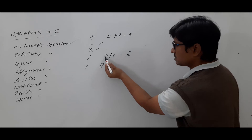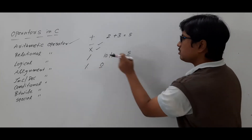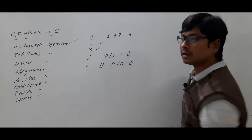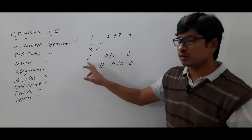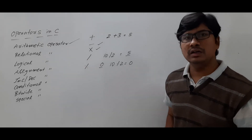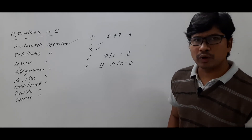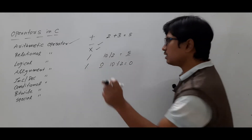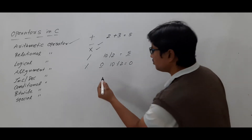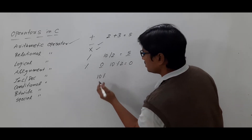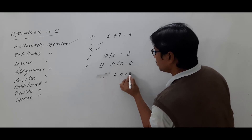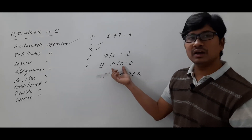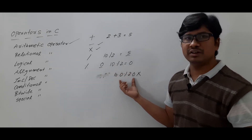If you are doing 10 divided by 2, the division operator will give you the output as 5. If you are doing 10 modulus 2, then it will give you the remainder. One more important point about the modulus operator: the modulus operator can only be used for integer constants. If you write 10.0 modulus 2.0, this is not valid. You can use modulus only between integer constants, not for real constants.